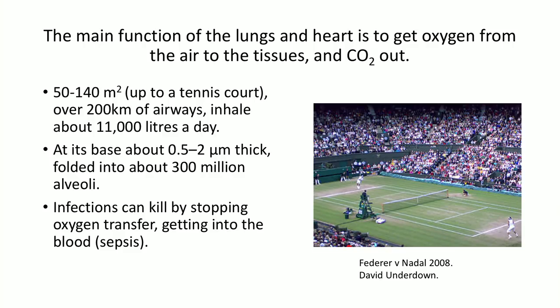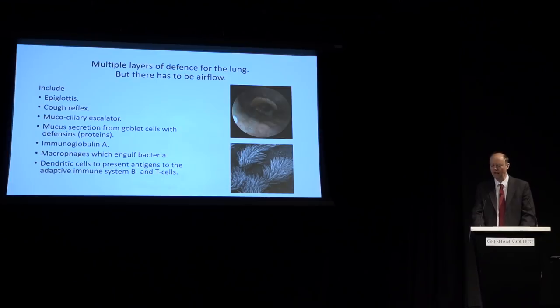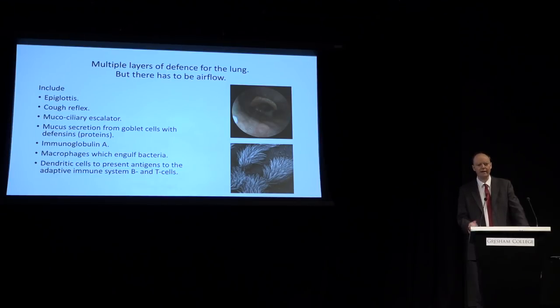The surface area of your lung is roughly the same size as a tennis court — extraordinarily large. It's got over 200 kilometres of airways, and at the end it's got blind endings with incredibly thin cells, because oxygen has to go across them from the air into the blood, and carbon dioxide back. It has to pump through about 11,000 litres a day. That's just doing ordinary things. So it's actually amazing, given that enormous surface area open to the outside, that we have so few infections of the lungs. The reason is that the lungs have multiple layers of defence.